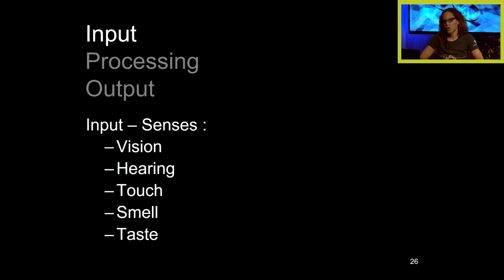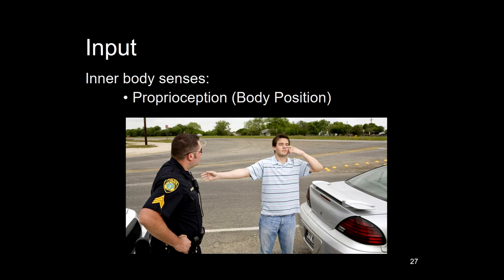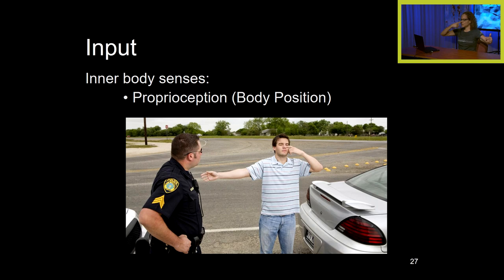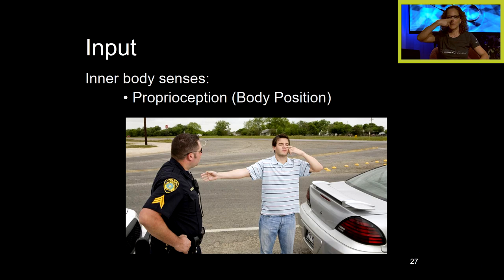That is output — we make a decision and act upon it. For input, we have the senses: vision, hearing, touch, smell, and taste. There are also inner body senses like proprioception, which has to do with our body position. A good example is when you're intoxicated, you cannot stand with your eyes closed and touch your finger to your nose — because you don't have good proprioception.